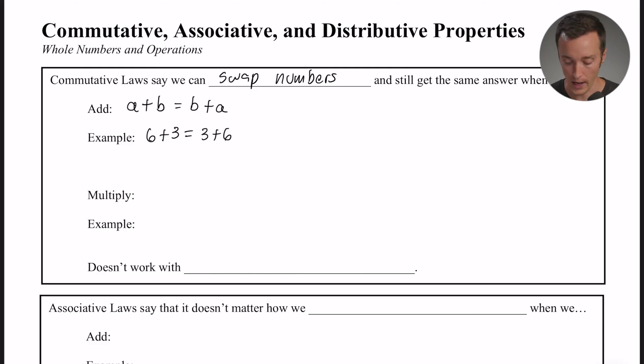But it's also true when we multiply. So for example, if I had any two numbers a times b, I would get the same thing if I multiplied b times a. Just as a quick example, if I had 2 times 4, that would be 8, and I would get the same thing if I did 4 times 2. That's also 8.